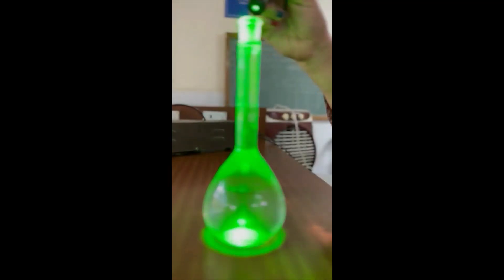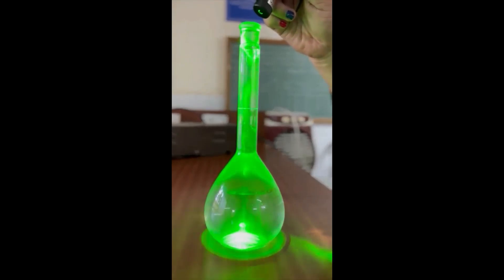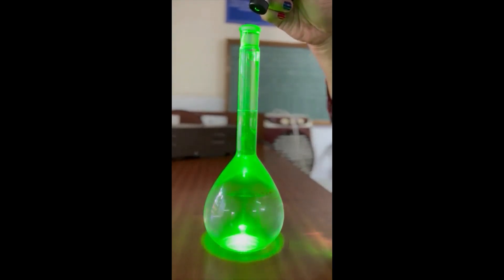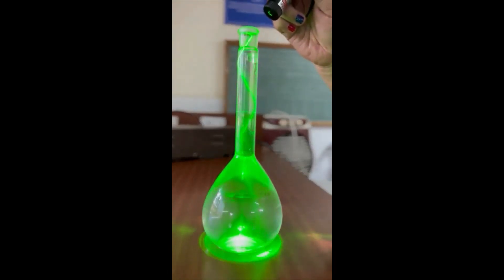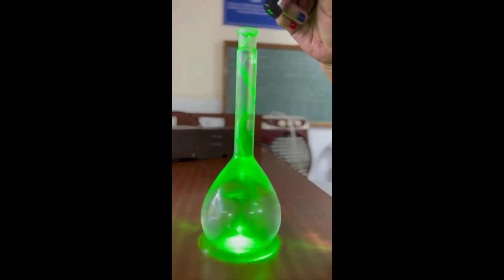You can see the light getting reflected at multiple points within the neck of the conical flask. This is how it travels in a fiber.